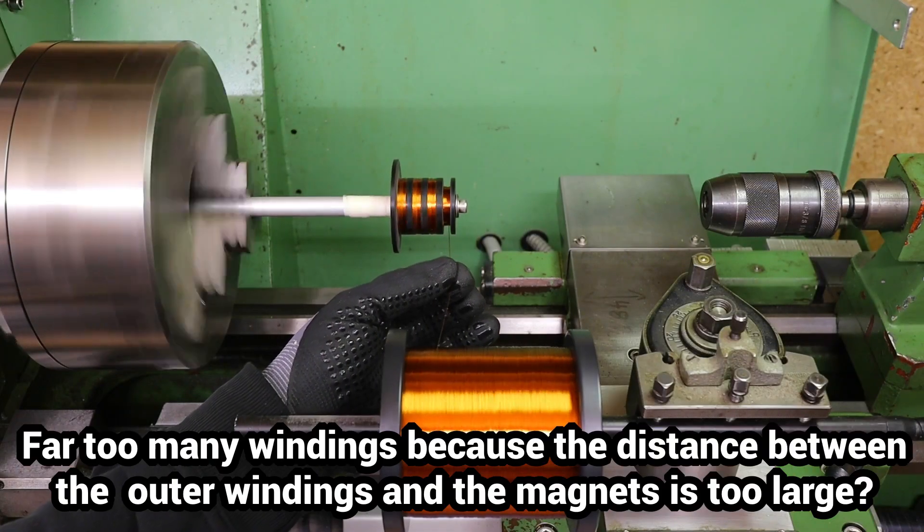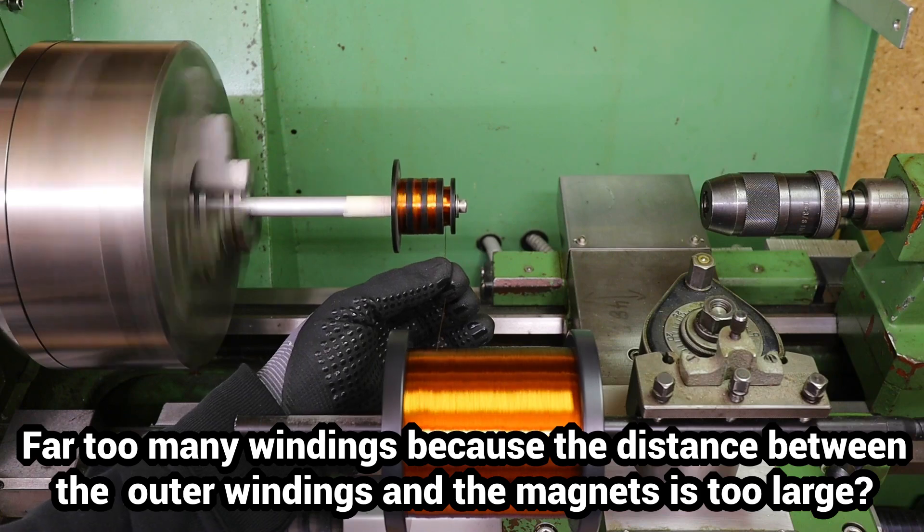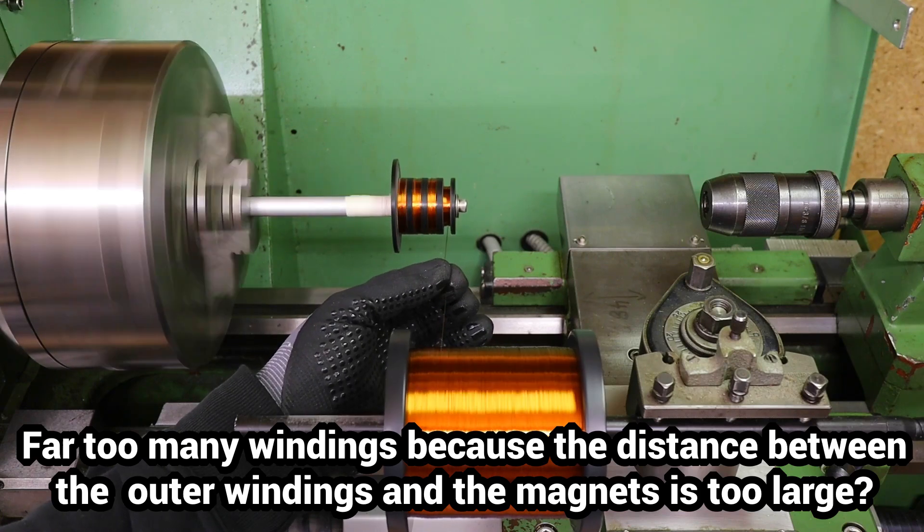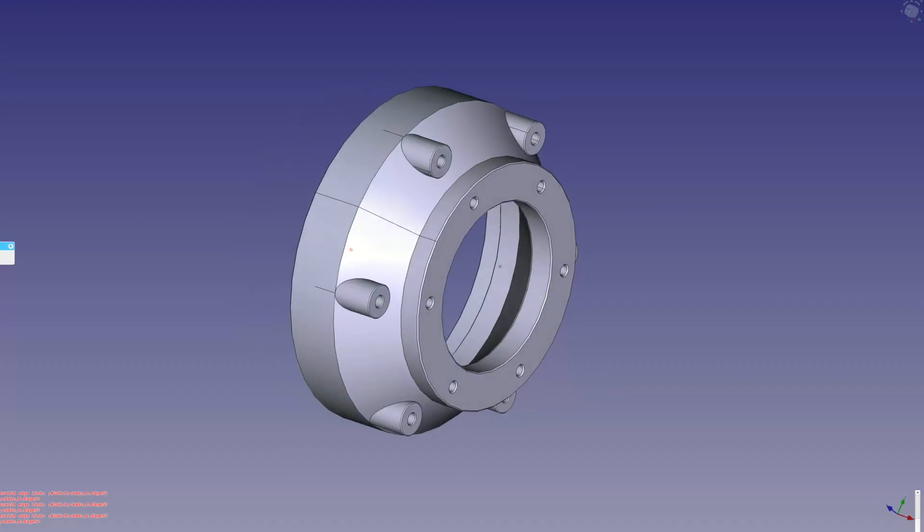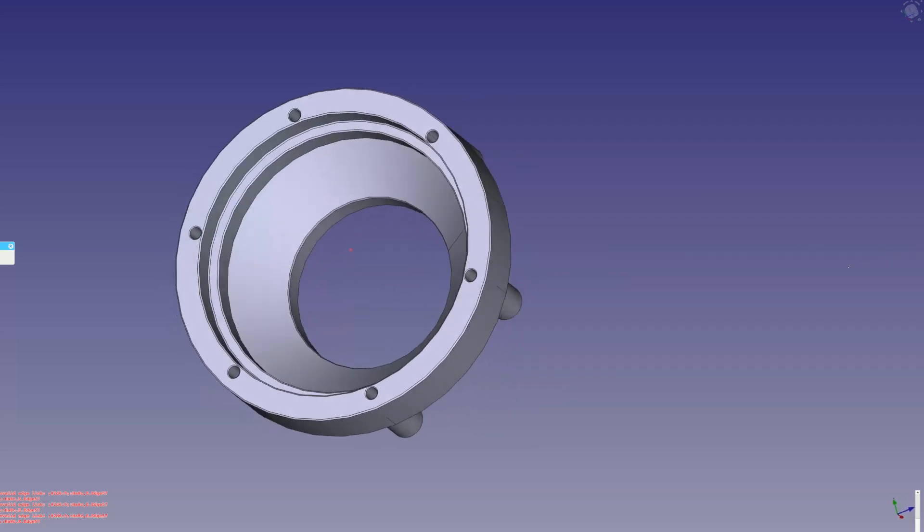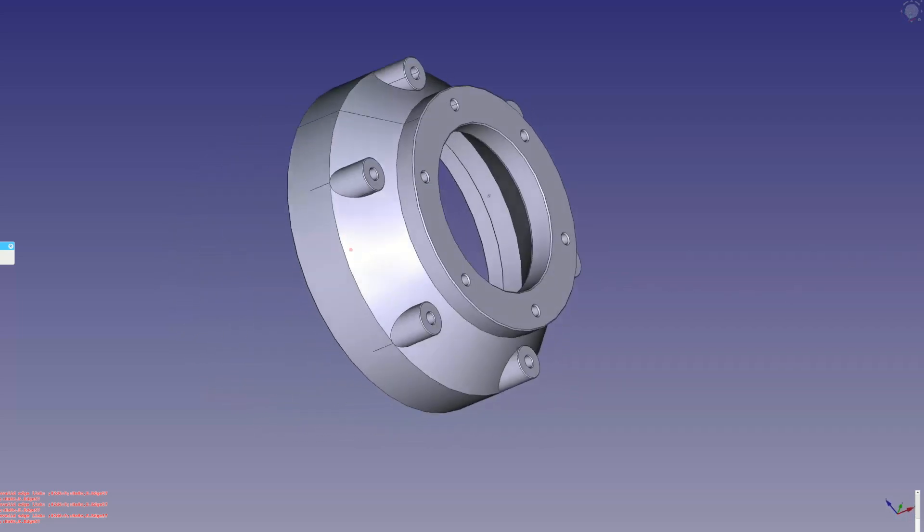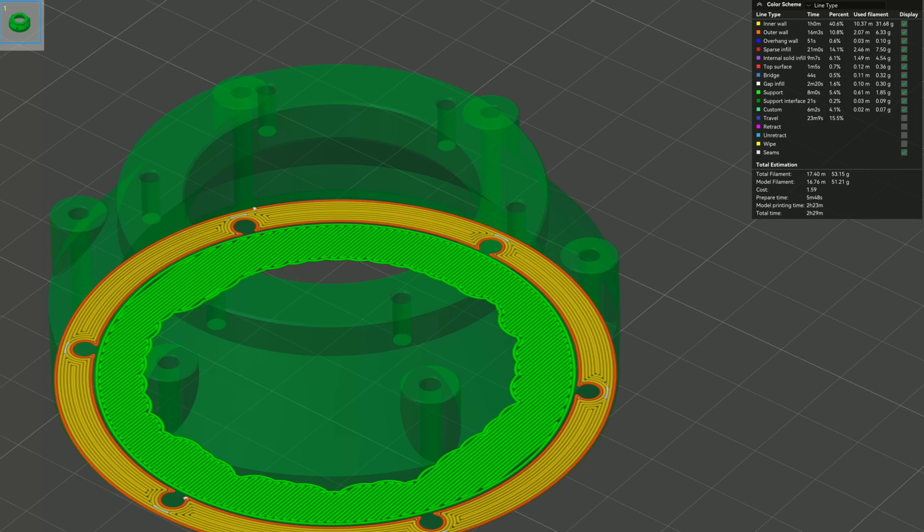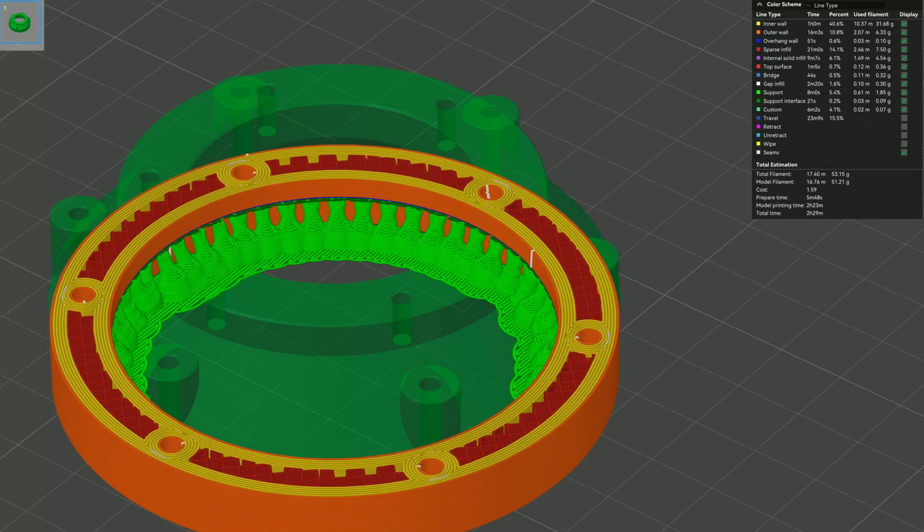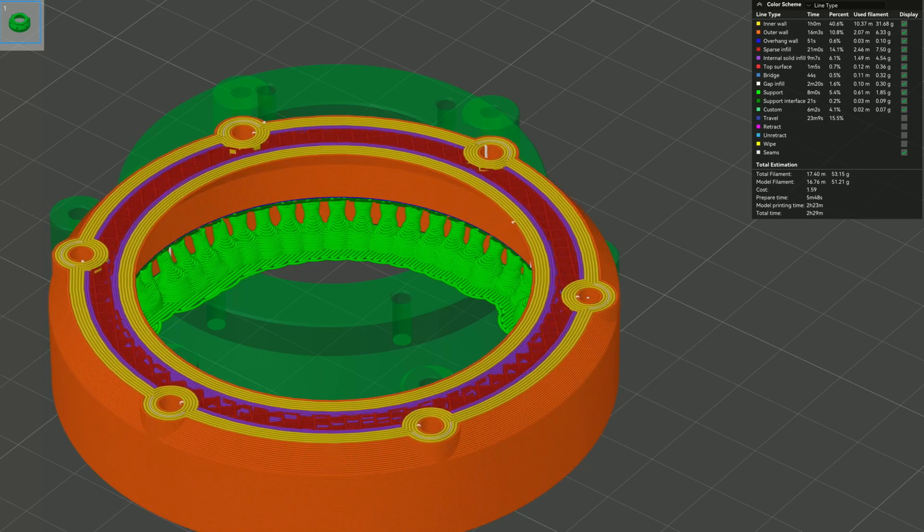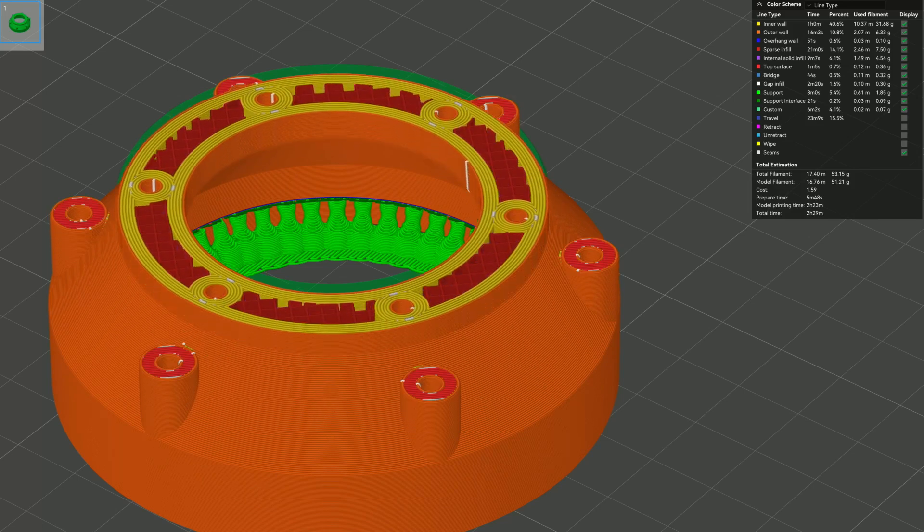The enameled copper wire is only 0.2mm thin and I have to be very careful not to break it. The coil holder must align the coils at the correct distance and exactly center to the piston rod with the magnets. Next time I will have to leave more space and bigger gaps here. Everything is very tight and difficult to align.